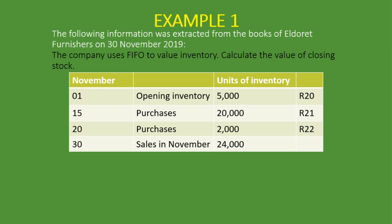So let's take a look at this example. It's a very easy method using the periodic inventory system. We're told that the following information was extracted from the books of Eldoret Furnishers on the 30th of November 2019. The company uses FIFO to value inventory — calculate the value of closing stock. Your question should indicate whether you're using periodic or perpetual, but here we are using the periodic inventory system.